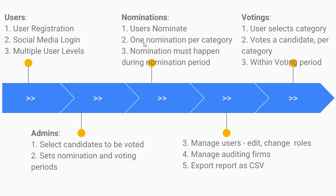The next thing we want to have is nominations — we want people to be able to nominate. Nominations are simply about selecting the people that will be voted for. Depending on how you organize your platform, admins might be the ones to enter the nominee details, or you can build a system like ours where users are able to nominate people themselves.